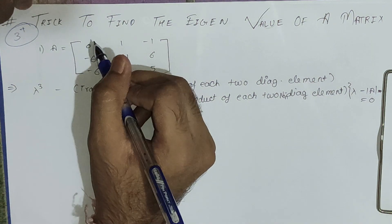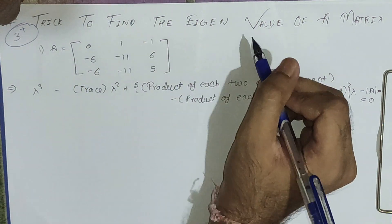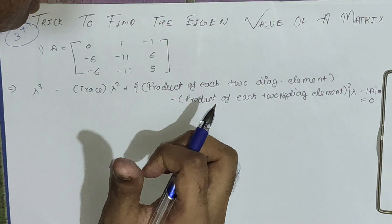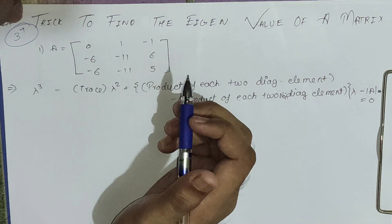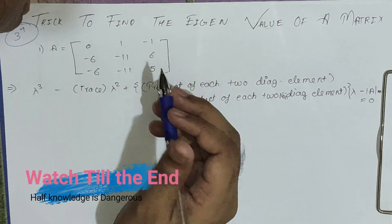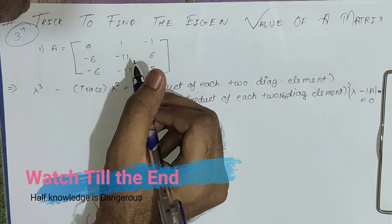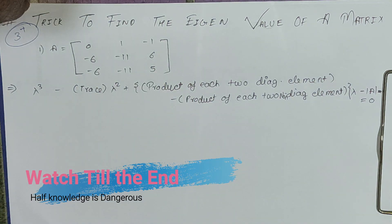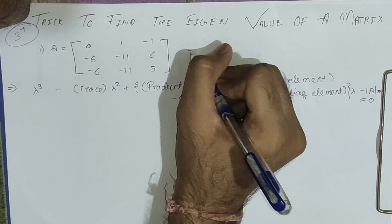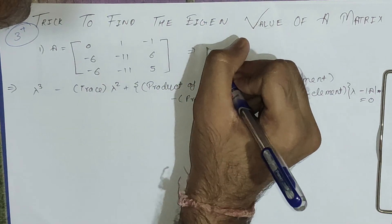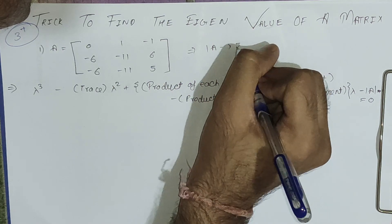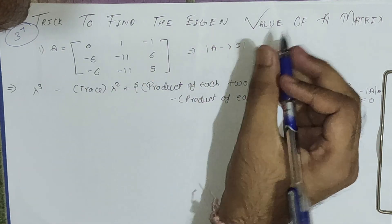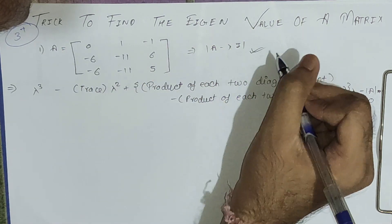Hello friends, today we will see the trick to find the eigenvalue of a matrix. We'll directly jump to the sum and there we will see the trick. We have this matrix and we need to find its eigenvalue. We usually find the determinant of (A minus lambda I), but in this video we are not going to use that method — we are going to use a trick.